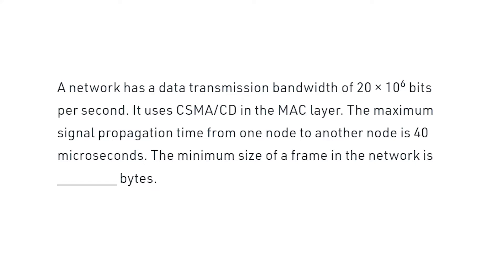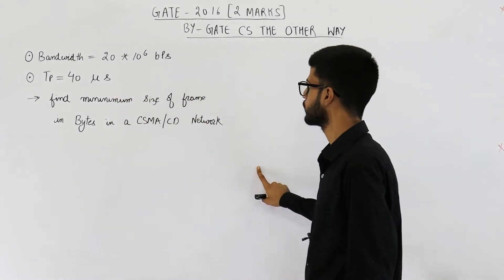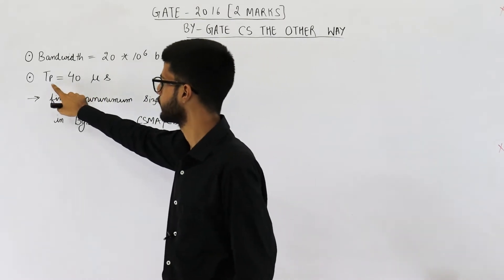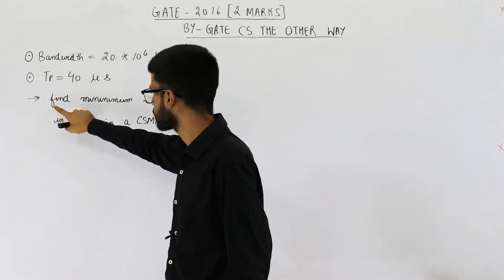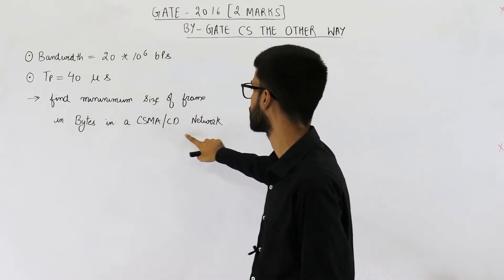You can have a look at the statement. All the important information given in the question is noted down here. They have given you the bandwidth and propagation delay. They're asking, find the minimum size of frame in bytes in a CSMA/CD network.